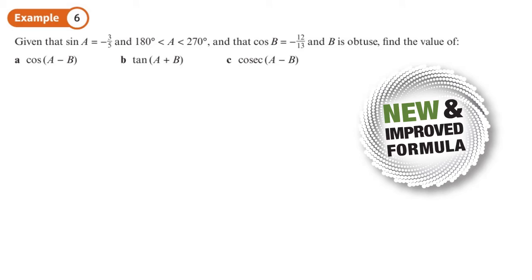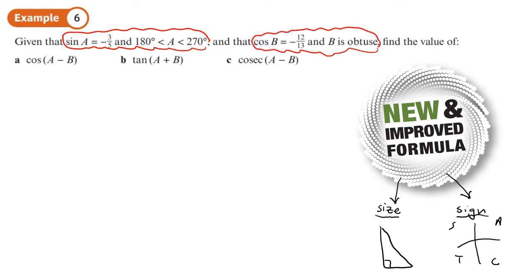We've got a new improved method for working out questions like this. We need to do two things. We need to work out the size of the angle, and we're going to do that by using Pythagoras. We're going to work out the size of the angle by using a cast diagram. So let's do that. We've got angle A and its size, and angle B and its size. Let's get our values right.